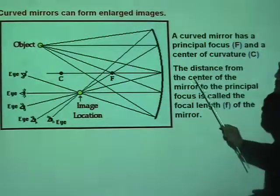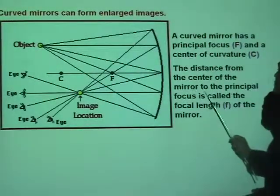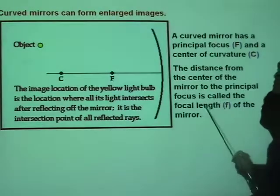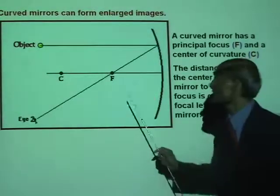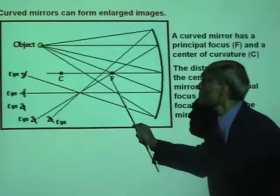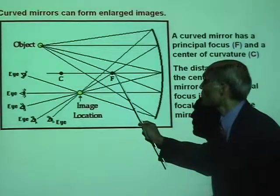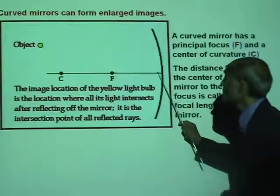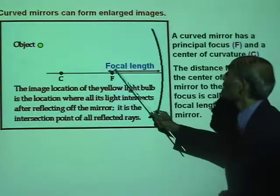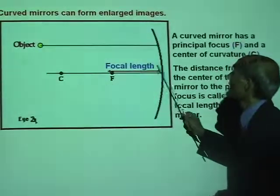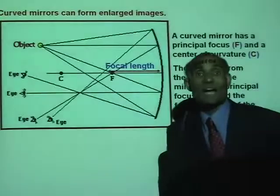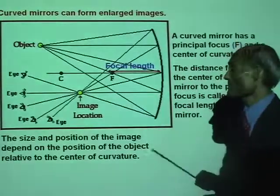The distance from the center of the mirror to the principal focus is called the focal length. So a curved mirror has a focal length.